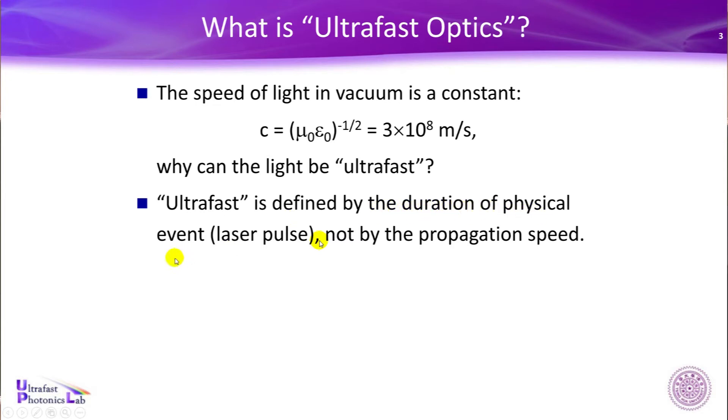And actually, the ultrafast is defined by the duration of physical event. For example, the laser pulse is a physical event in our case. So it's about the laser pulse duration. The ultrafast is not about the propagation speed. No matter the laser pulse is short or broad, they propagate at the same speed. But if a pulse is very short, we call it fast. If it's a broad pulse, it's slow. That's why you have this term.